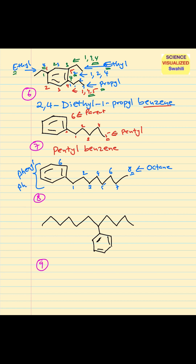This phenyl group is on carbon number one, so we'll say 1-phenyloctane. As mentioned before, you really don't need to show this one — you can eliminate it because it implies it's on position number one if you don't show it. But if it was on another carbon, like two or three or four, then you will need to show the position.